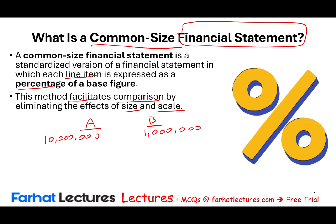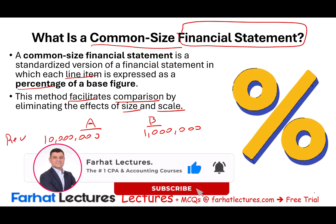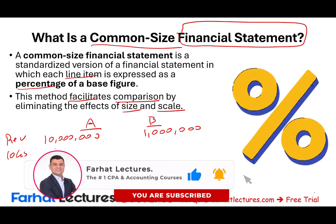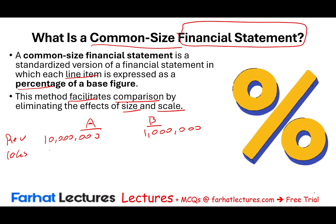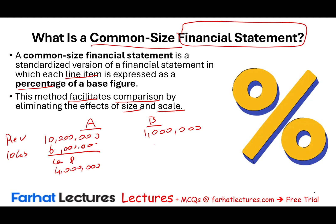Notice, Retailer A's revenue is 10 times that of B. Now let's take a look at Cost of Goods Sold. Cost of Goods Sold for Retailer A is $6 million, so their gross profit is $4 million. Retailer B's cost of sales is $300,000 and their gross profit is $700,000.